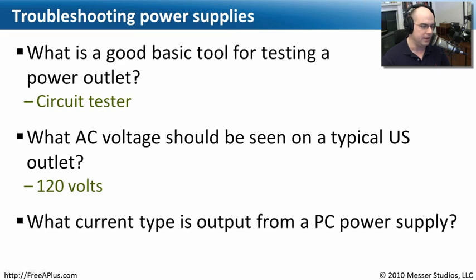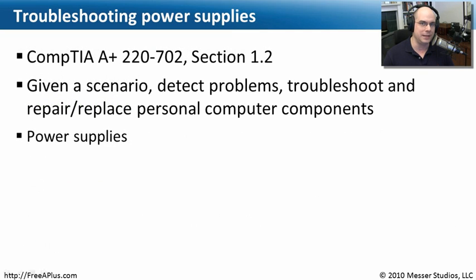And last question, what current type is output from a PC power supply? There's a certain current we're expecting to come out of the power supply. We're obviously putting AC power into the power supply. On the other side, we should expect to see direct current, DC power, coming out of the power supply.